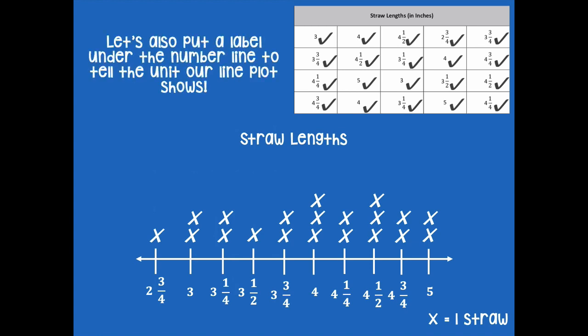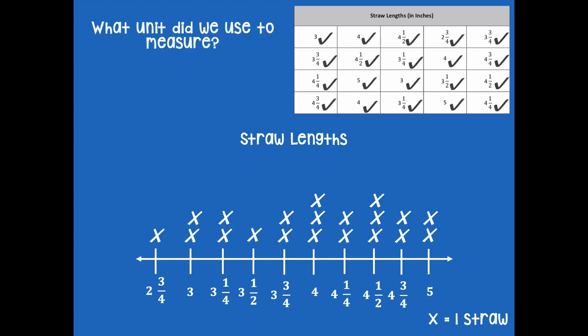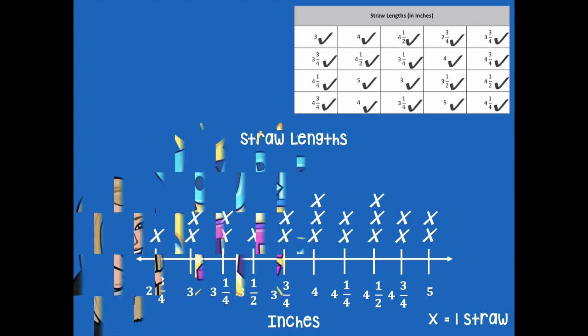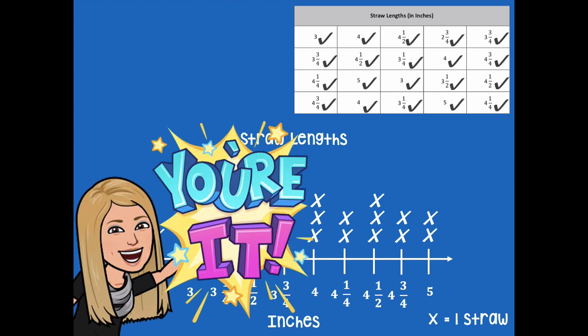Let's also put a label under the number line to tell the unit our line plot shows. What unit did we use to measure? We measured inches — and within our inches, we measured quarter inches and half inches as well, but overall we measured in inches. So I can add that to my line plot on the bottom. Pause the video, add inches to the bottom to label the unit that we measured in, and then click play when you're ready for the next step.